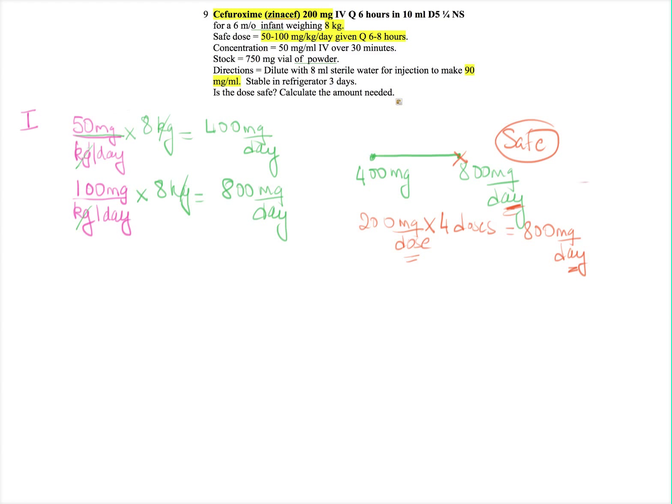Now that brings us to the second part of the question which is how much are you going to give this patient. To calculate how much you're going to give this patient, all you're going to do is simply pick out the concentration. If you notice, it does say to dilute with 8 milliliters. You have a total 750 milligram vial of powder. All of those are not needed for the math. So mathematically you need the concentration which is 90 milligrams per ml.